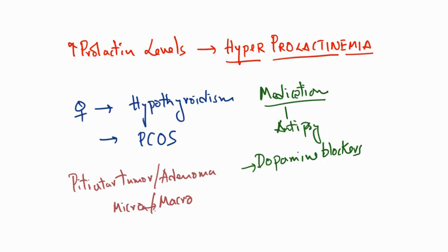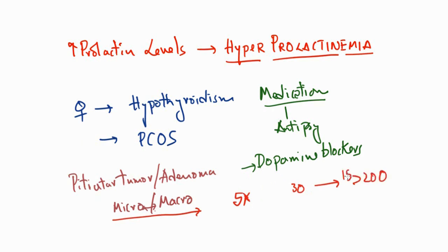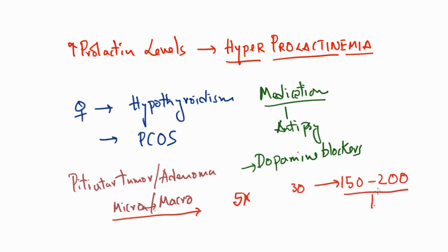The highest levels of prolactin increase are seen with pituitary tumors. Whenever you see prolactin levels that are five times the upper limit — for example, if the upper limit is 30 and levels are greater than 150 to 200 — these levels are most likely indicative of a tumor. All other causes will increase prolactin levels, but usually less than 100 to 150.